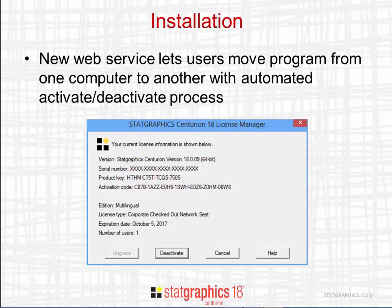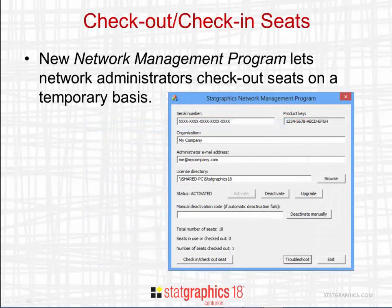StatGraphics 18 also has a new installation procedure. We've written a web service to let users easily move the program from one computer to another. On the License Manager dialog box, there's a button labeled Deactivate — once you deactivate your license on one computer, you can then activate it automatically on another. For companies with multi-user network licenses, we've written a new network management program that lets administrators see how many users are using the licenses at any given time, and allows them to check out seats for users that need to install a license temporarily on a standalone computer.